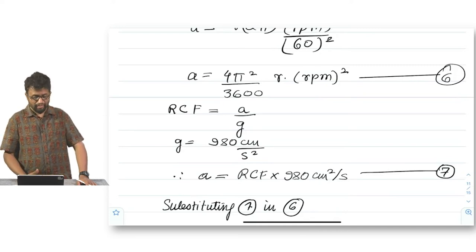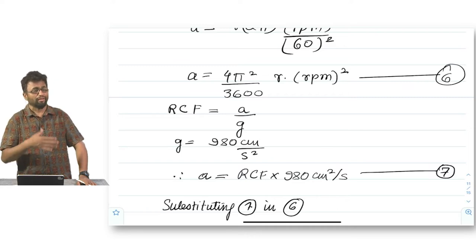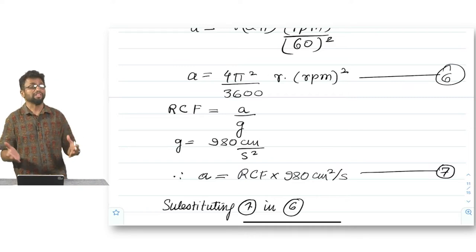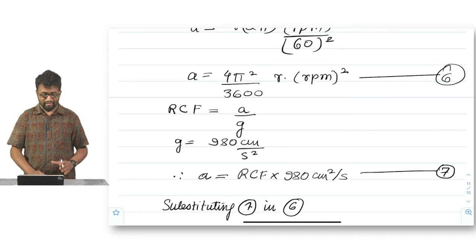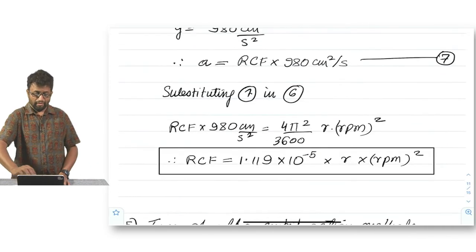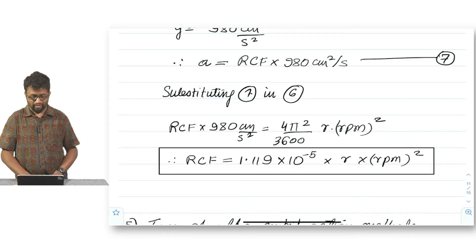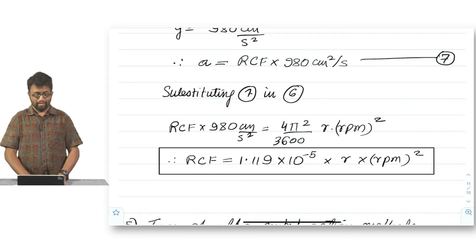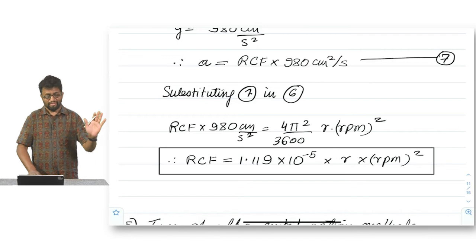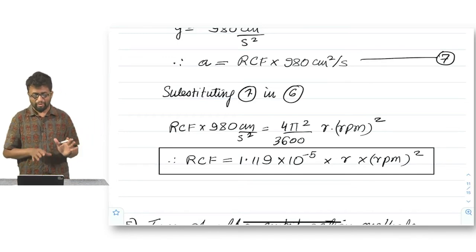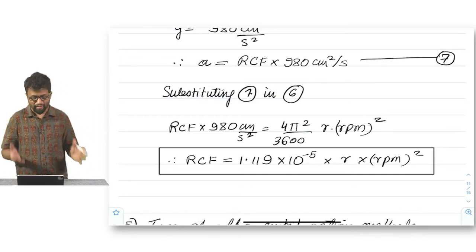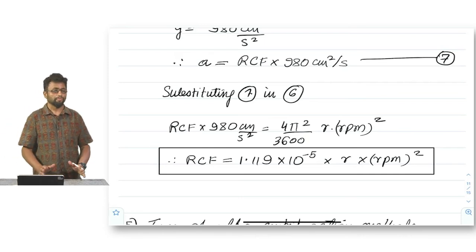RCF on the other hand, rotational centrifugal force is nothing but the fold g of acceleration. We said that, right? How many g's, remember? So when we now take this equation and say therefore that A is equal to RCF into 980 centimeters square per second using CGS units, then RCF into 980 centimeters square per second is equal to 4 pi square upon 3600 into numerator R into RPM square. Rearranging the terms with RCF on the left side gives us 1.119 times 10 to the power minus 5, you can use your calculators to check, into R into RPM square. This is how we get the number, alright?